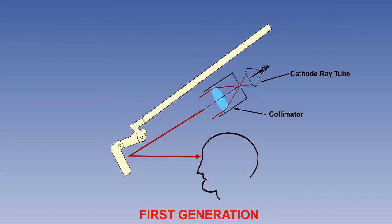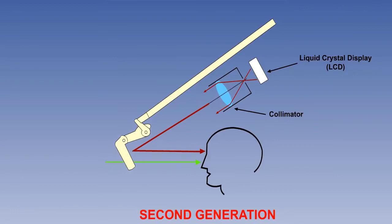There are currently four generations of HUD technology. The first uses a cathode ray tube to generate the symbology. Second-generation systems replace the cathode ray tube by a solid-state light source, such as a liquid crystal display.